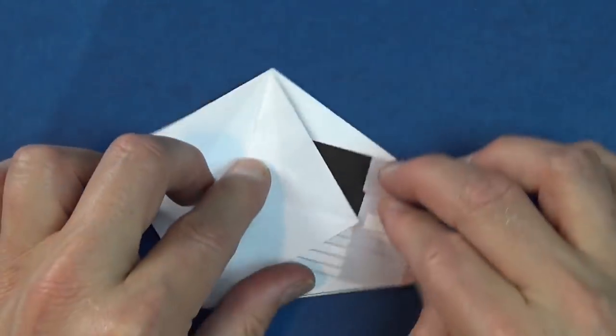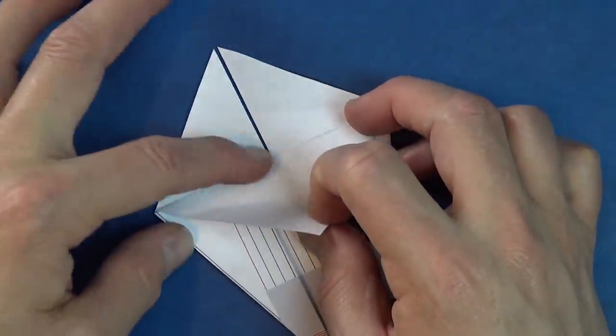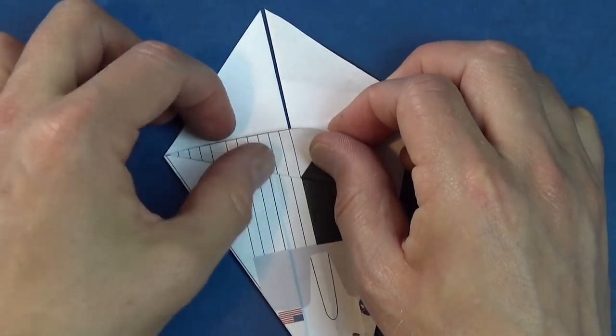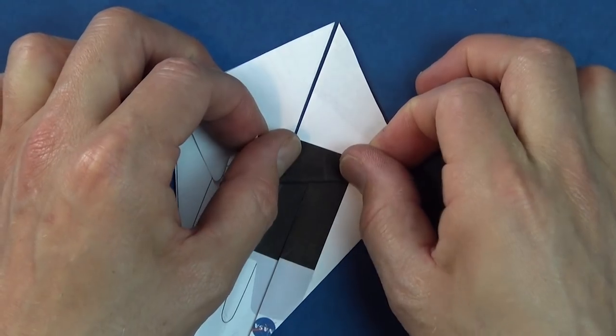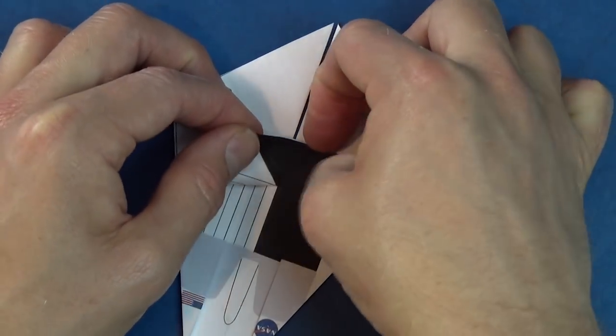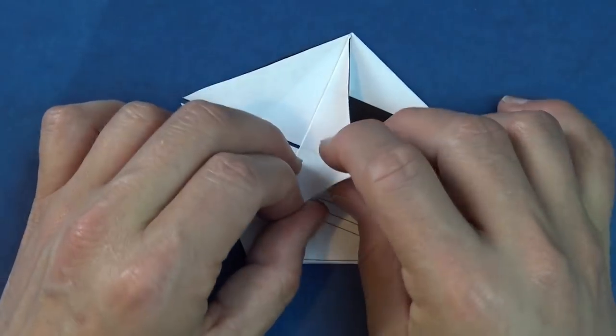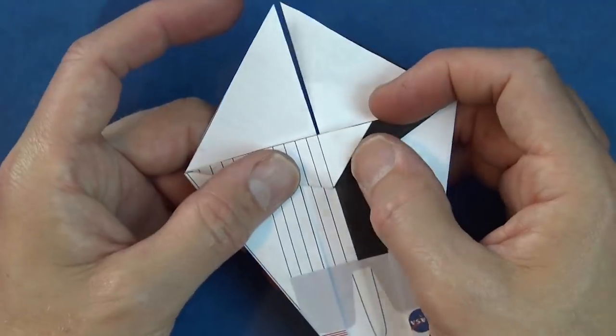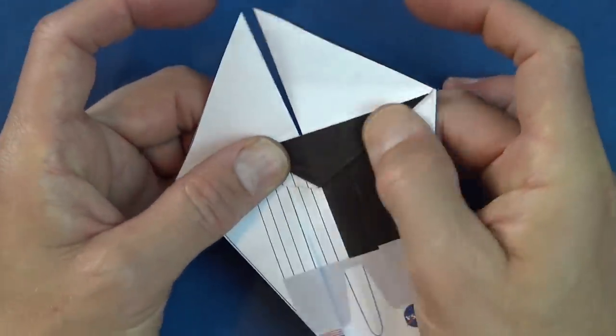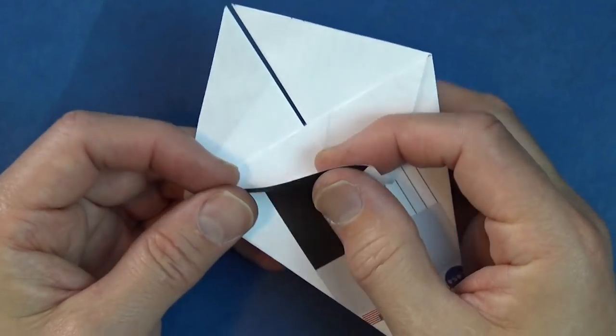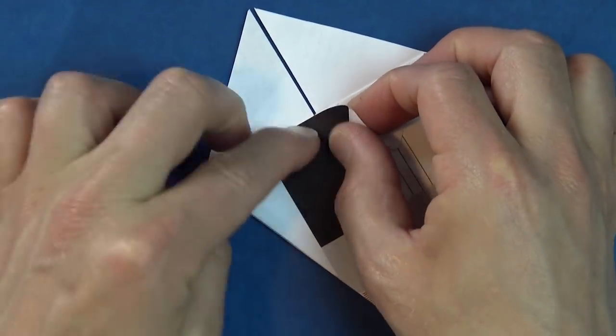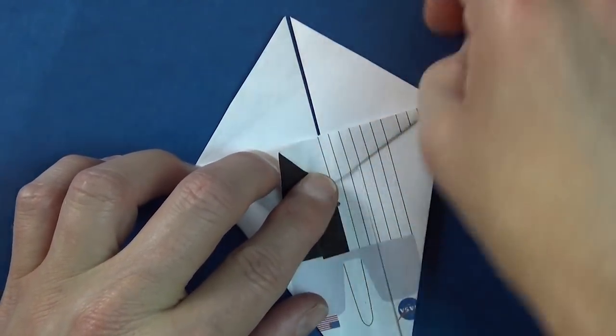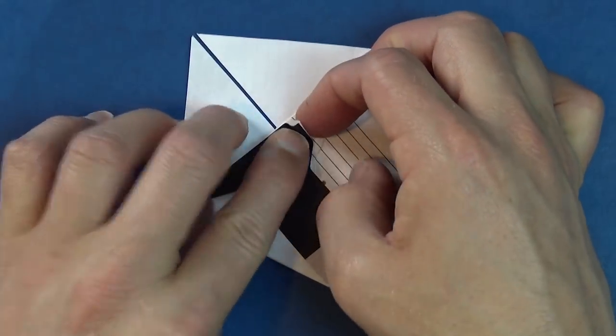Okay, now we're going to make a rabbit ear. So rotate and fold this flap up so that this edge aligns with this edge. And just fold from here to there. And unfold and repeat. And now unfold and pinch the corner like this. And fold it to the right. And fold it to the left. And now turn over and repeat on this side. Like that.